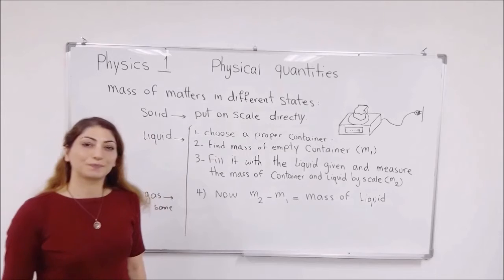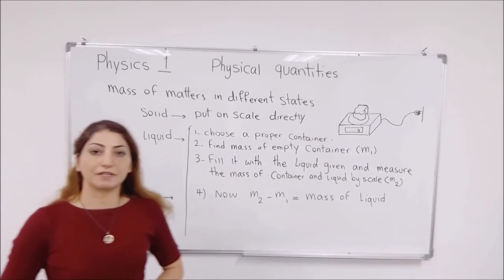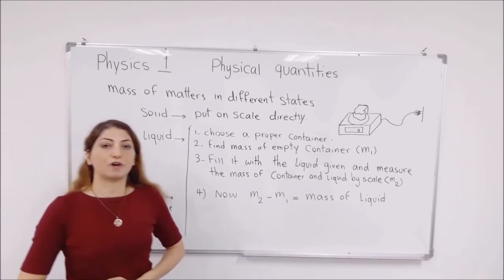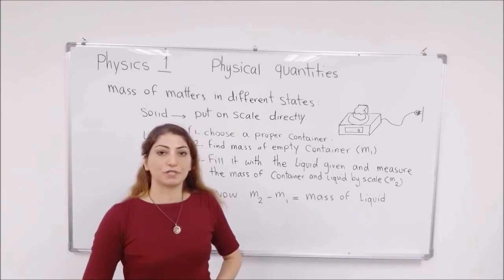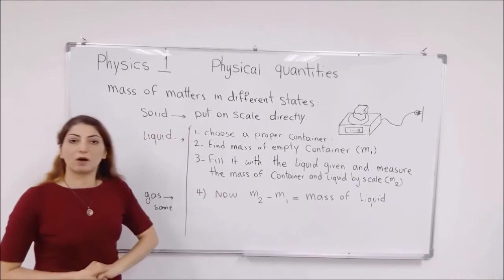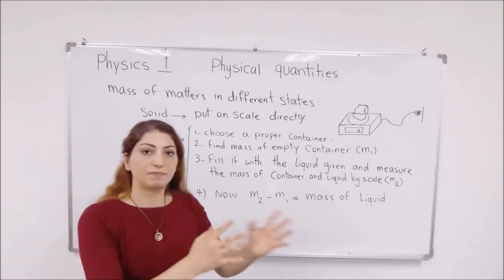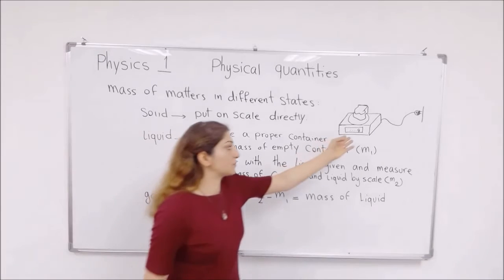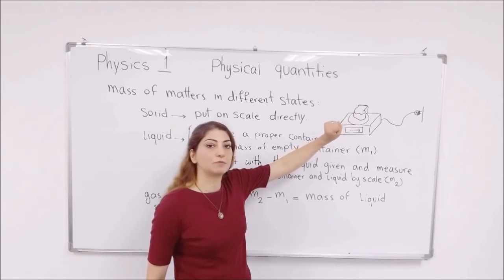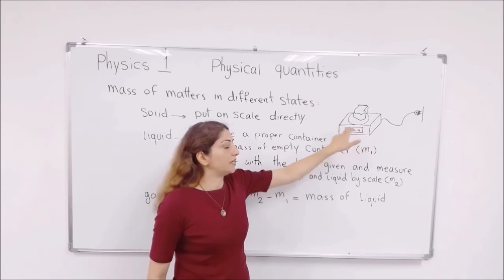Now let's see if we have different states of matter and we want to find their mass. How the procedure is to find the mass of these different objects. For example, we have a solid object and we want to find its mass. So we can directly, simply put it on the scale and read the mass from the screen. So you have a solid object, you put it directly on the scale and you read its mass on the screen, usually in grams.